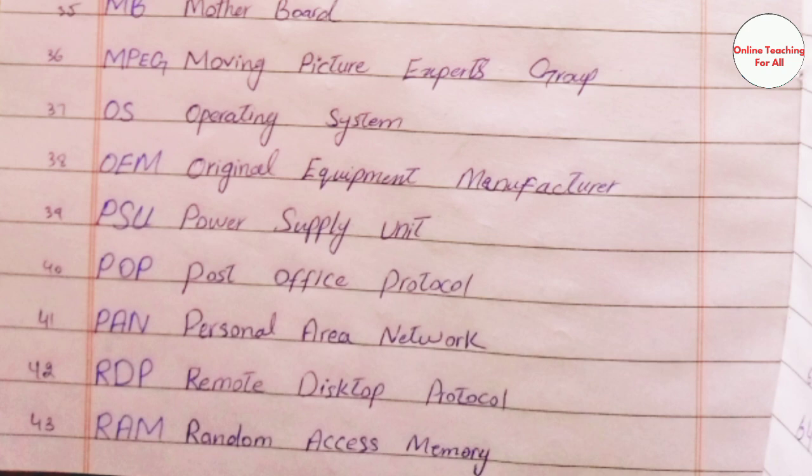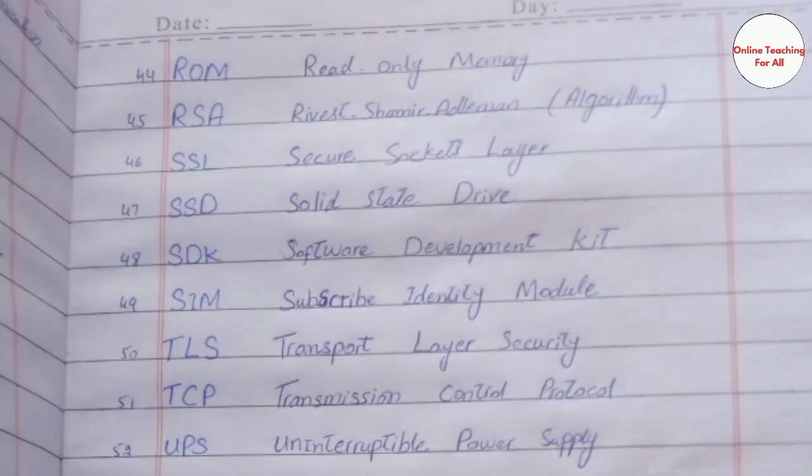RAM - Random Access Memory. ROM - Read Only Memory. RSA - Rivest Shamir Adleman algorithm. SSL - Secure Socket Layer. SSD - Solid State Drive. SDK - Software Development Kit. SIM - Subscriber Identity Module. TLS - Transport Layer Security. TCP - Transmission Control Protocol.